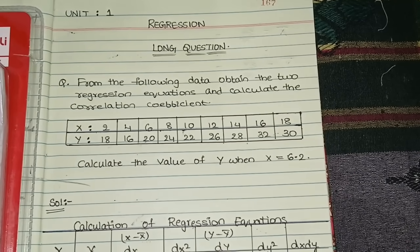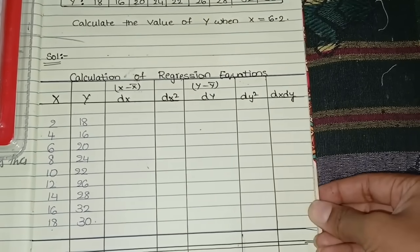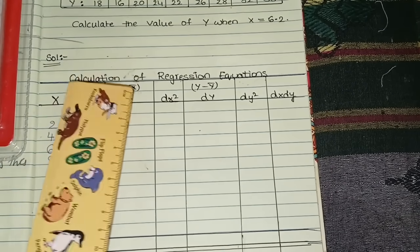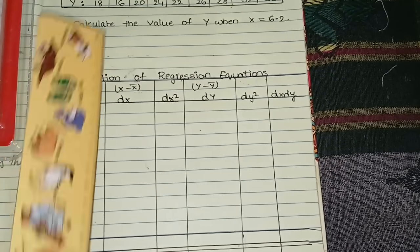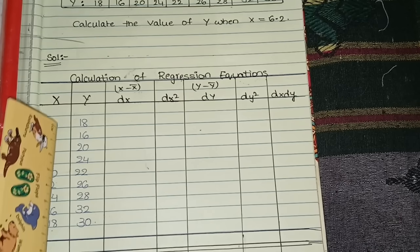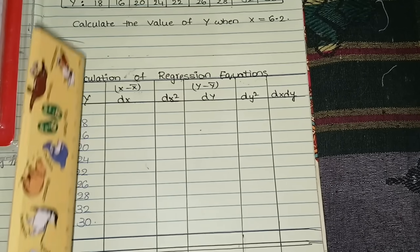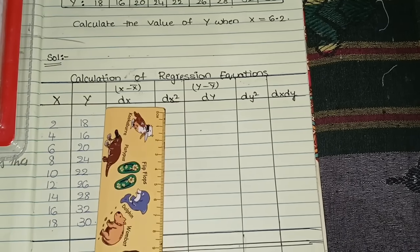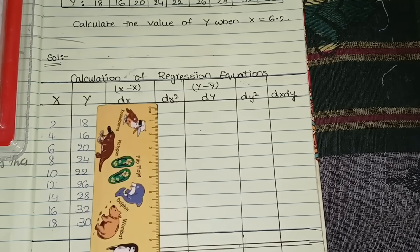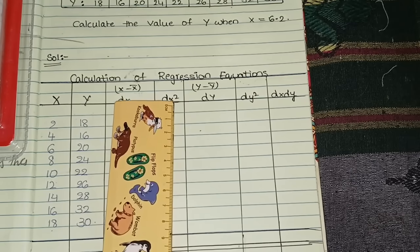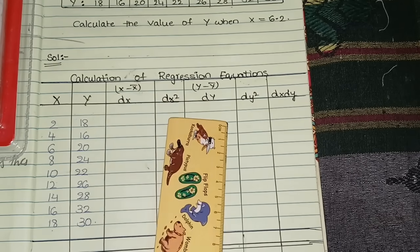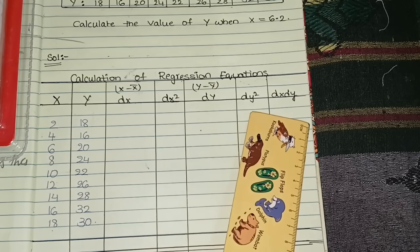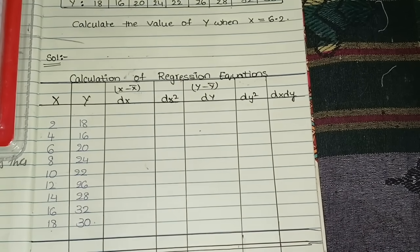First, for the regression equation you need to draw a table. The table for calculation of regression equations consists of: x values from the question, y values from the question, then columns dx (which is x minus x̄, so we need to calculate the mean), dx², dy (which is y minus ȳ), dy², and dx·dy.